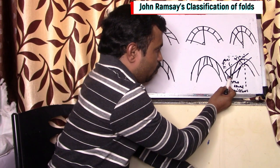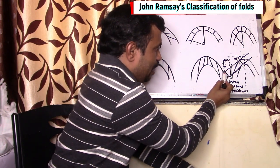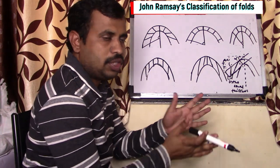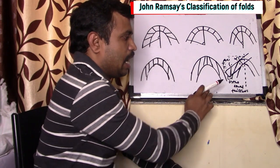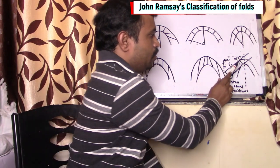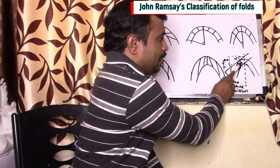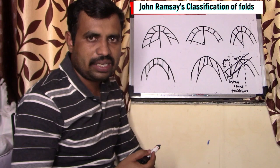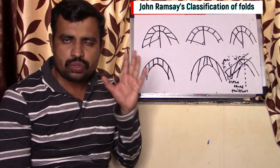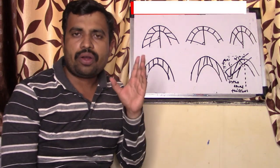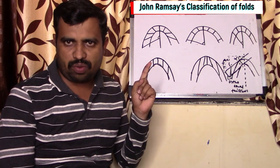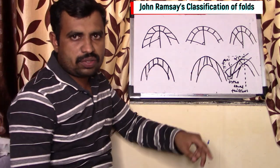Then when we go from point E to point F, and these two points are joined together, that thickness is called the orthogonal thickness. So a dip isogon is a line which is formed when we connect two points having the same inclination. This type of classification given by John Ramsey is used to describe a fold in profile based on the curvature of the inner and outer lines of a fold and the behavior of dip isogons. I hope you understood what a dip isogon is.